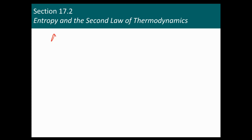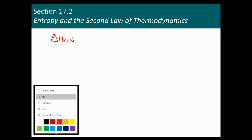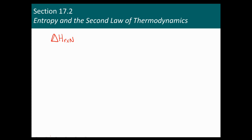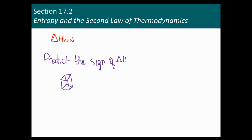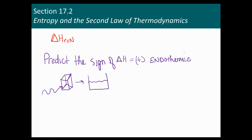Let's just review what we did. We looked at delta H of reaction and one thing we could do was predict the sign of delta H. For example, in our ice cube example, when it melts, we know that delta H is positive — that's an endothermic process. We know that heat is absorbed from the surroundings to help that ice cube melt.